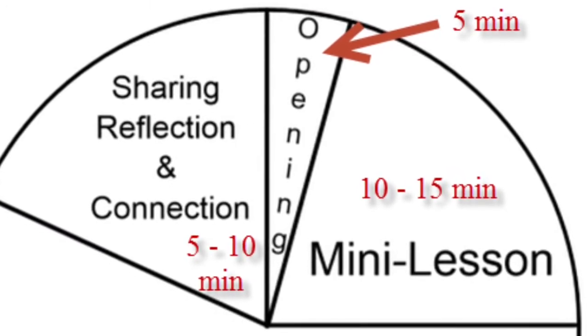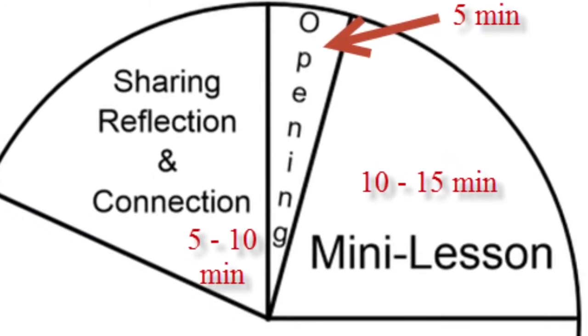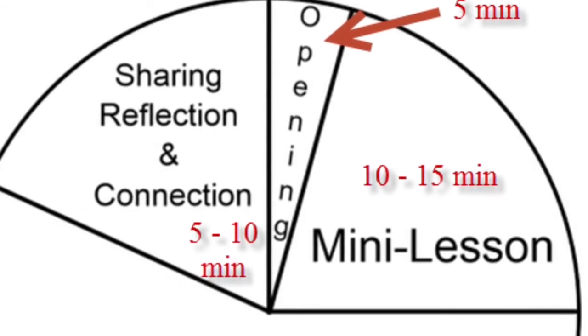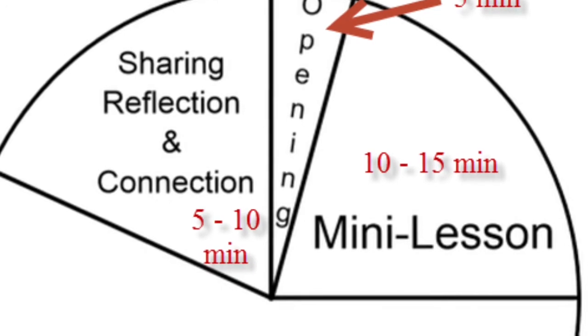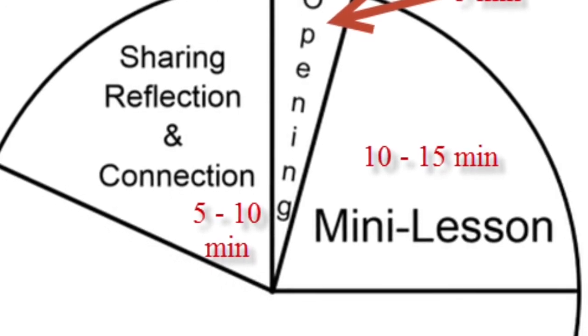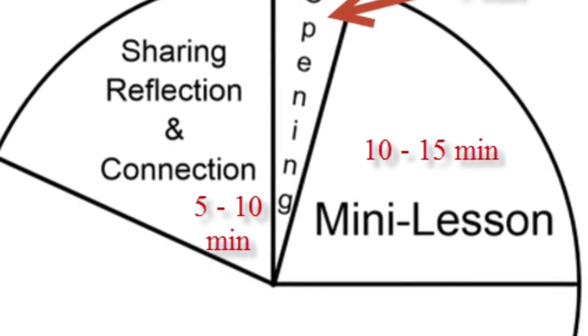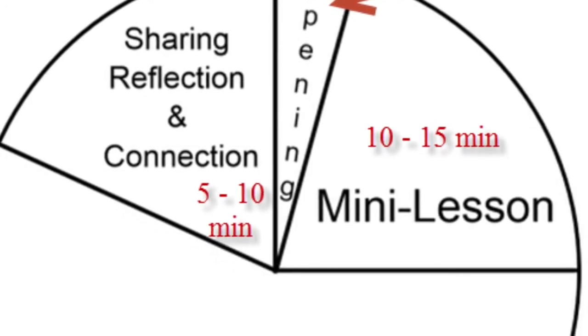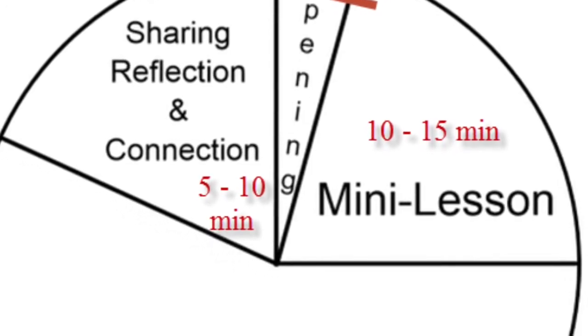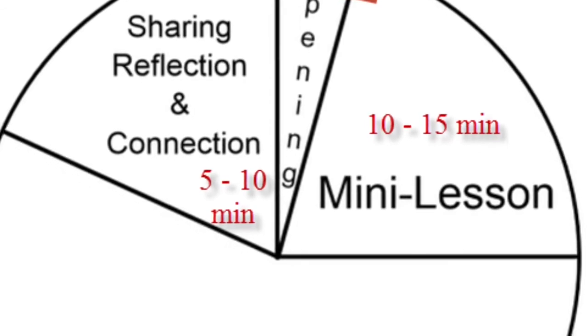Next up is the mini lesson. This portion of the workshop model lasts about 10 to 15 minutes. During this time the teacher leads the whole group with direct instruction. This could be the teacher modeling a specific skill or even a problem-solving strategy. It is important though that the teacher does not give the students the specific strategy to solve the day's problem.